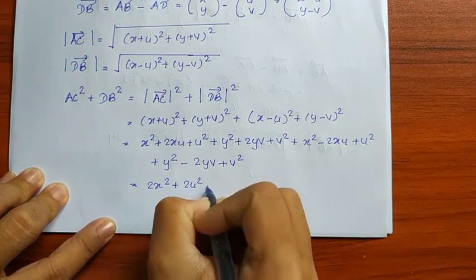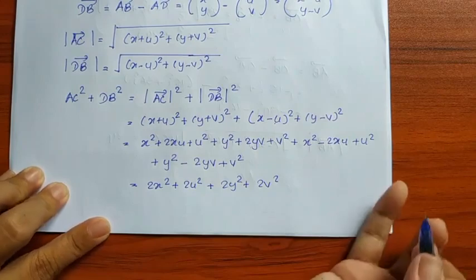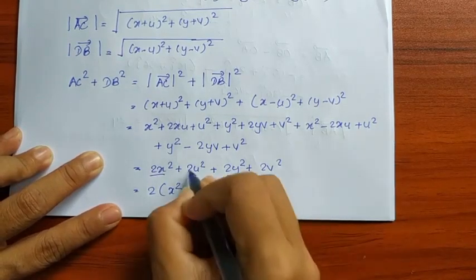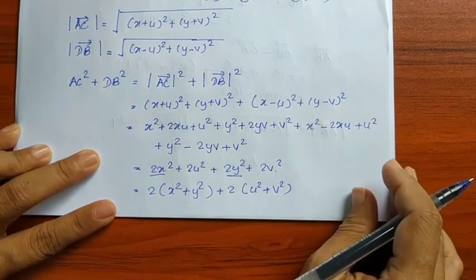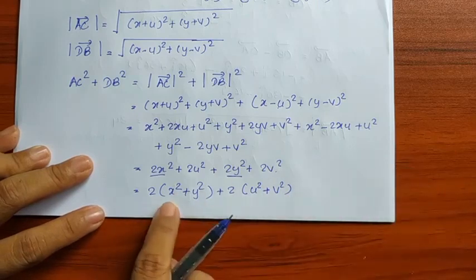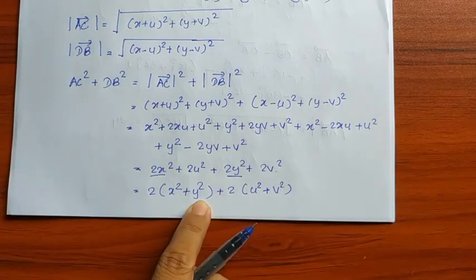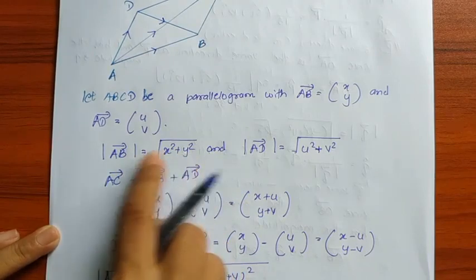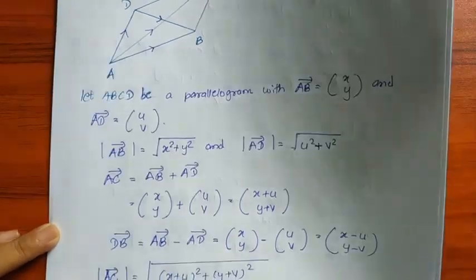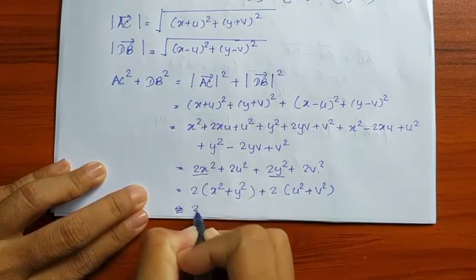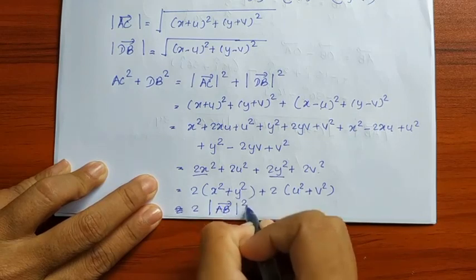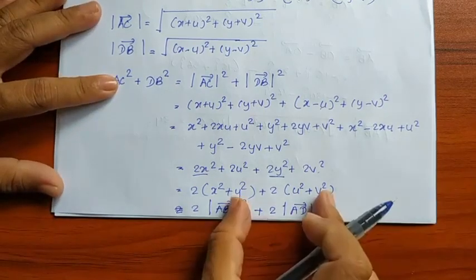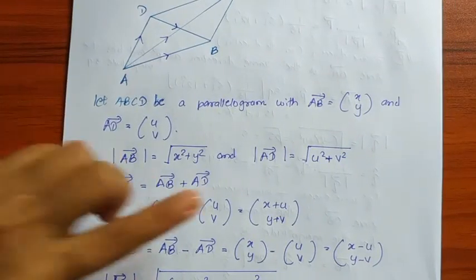This gives 2x squared plus 2u squared plus 2y squared plus 2v squared. We can factor out 2: 2 times (x squared plus y squared) plus 2 times (u squared plus v squared). Modulus of vector AB squared is x squared plus y squared, and modulus of vector AD squared is u squared plus v squared. So this equals 2 times modulus of AB squared plus 2 times modulus of AD squared.